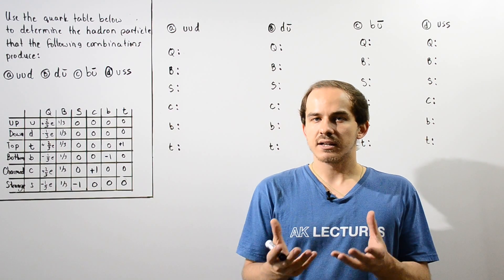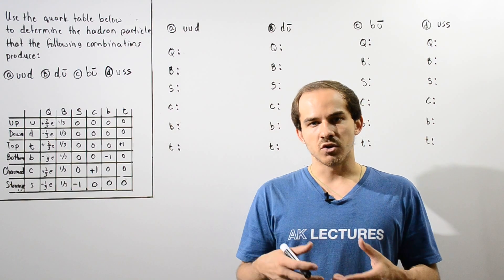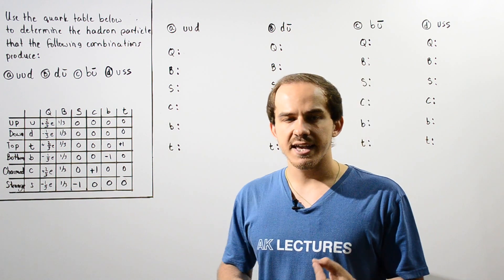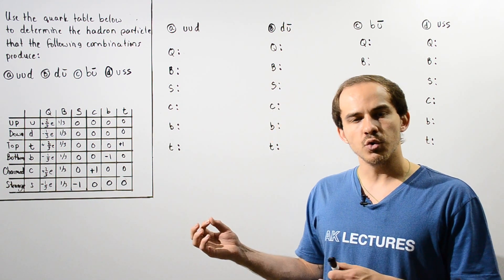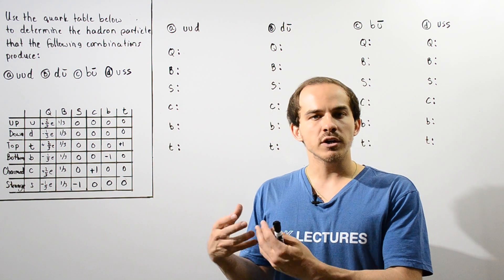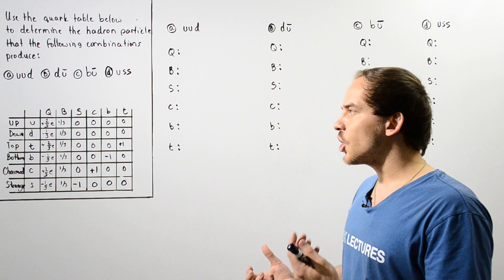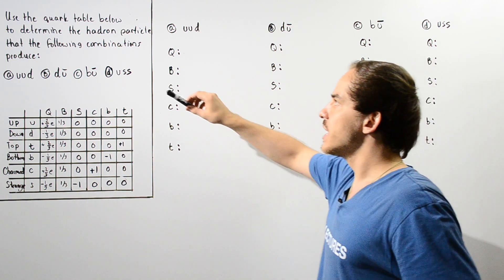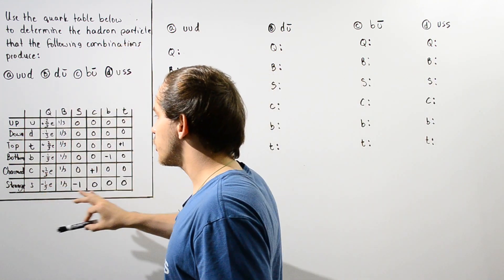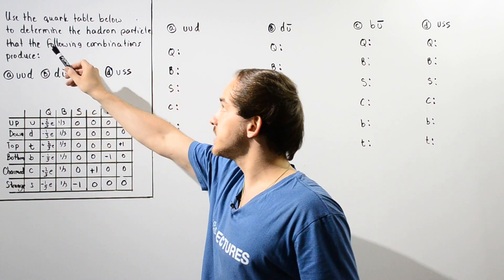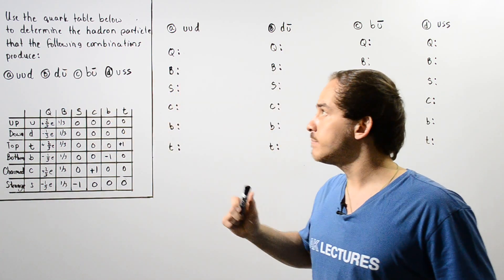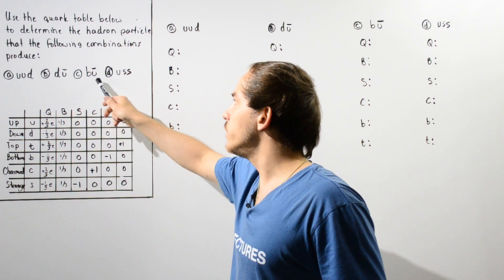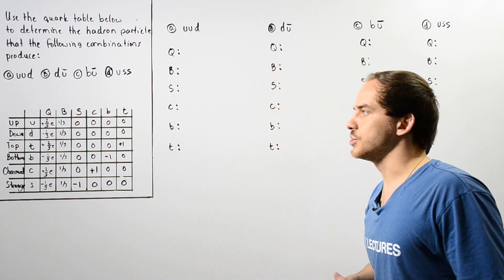Now that we discussed the concept of a quark, let's take a look at the following example in which we're going to use quark combinations to determine what the hadron particle is. Use the following quark table to determine the hadron particle that is produced from the following four quark combinations.